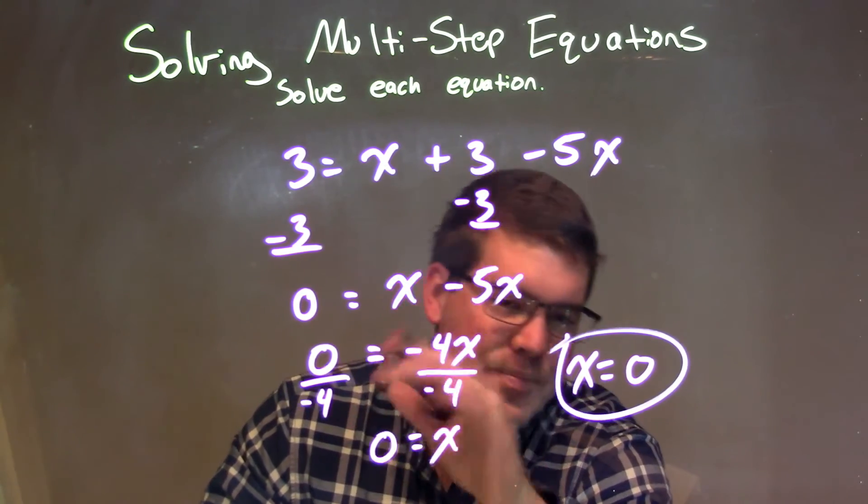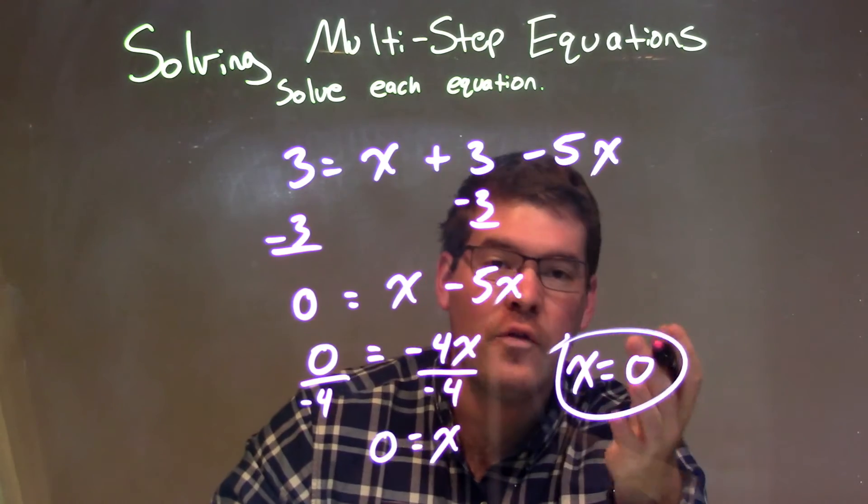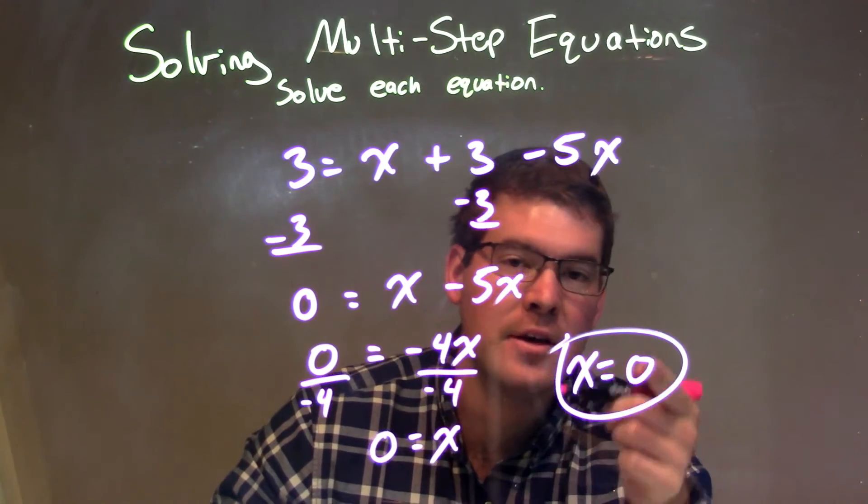That just leaves x by itself on the right. I rewrote that to have x come first. And so again, our final answer here is just x equals 0.